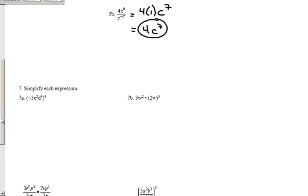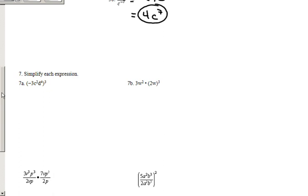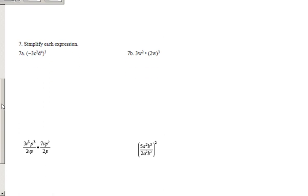So pretty basic stuff there. Now, just general exponent rules and everything, you'll say that it's similar to distribution when you have one like 7a. When you have negative 3c to the second, d to the fourth to the third, I just say, make sure you realize you're distributing it to exponents. So, it becomes negative 3 to the third, c to the 2 times 3, which is 6, and d to the 4 times 3, which is 12.